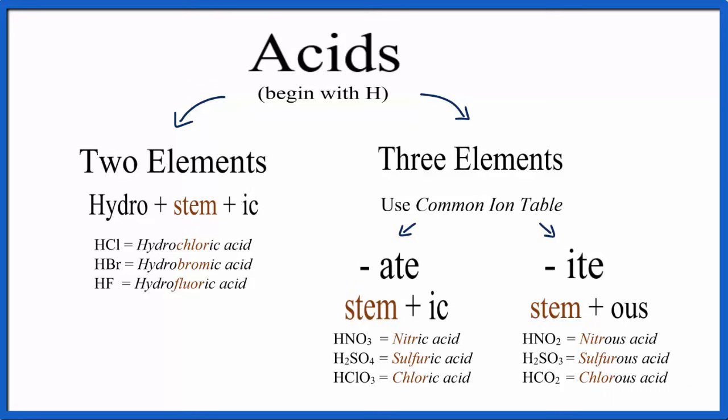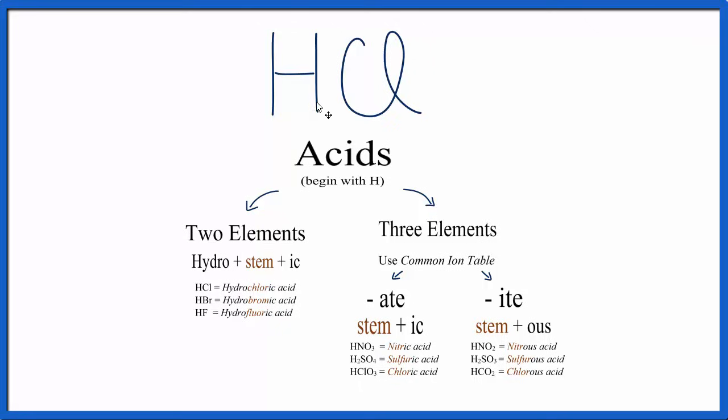We'll start with the classic, HCl. For HCl, we have two different elements, H and Cl. So we're going to use this part of our flowchart.